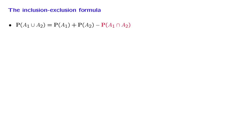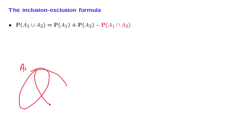In this segment, we develop the inclusion-exclusion formula, which is a beautiful generalization of a formula that we have seen before. Let us look at this formula and remind ourselves what it says. If we have two sets, a1 and a2, and we're interested in the probability of their union, how can we find it?